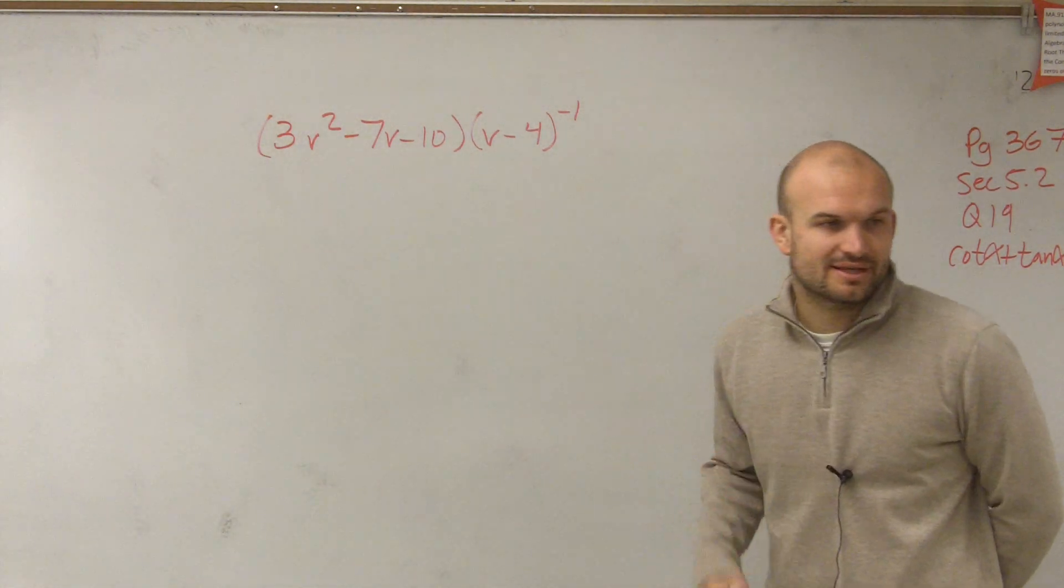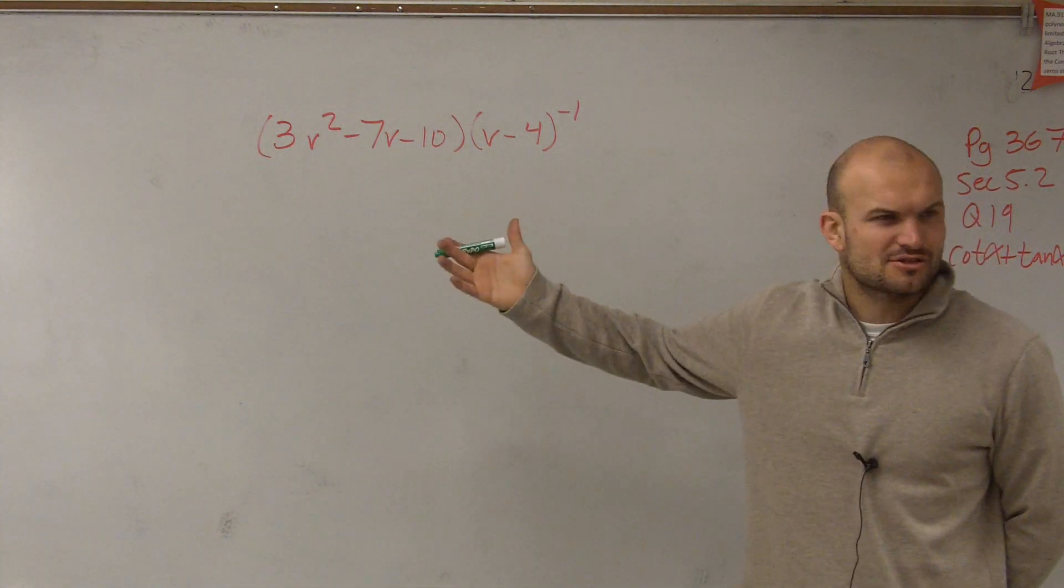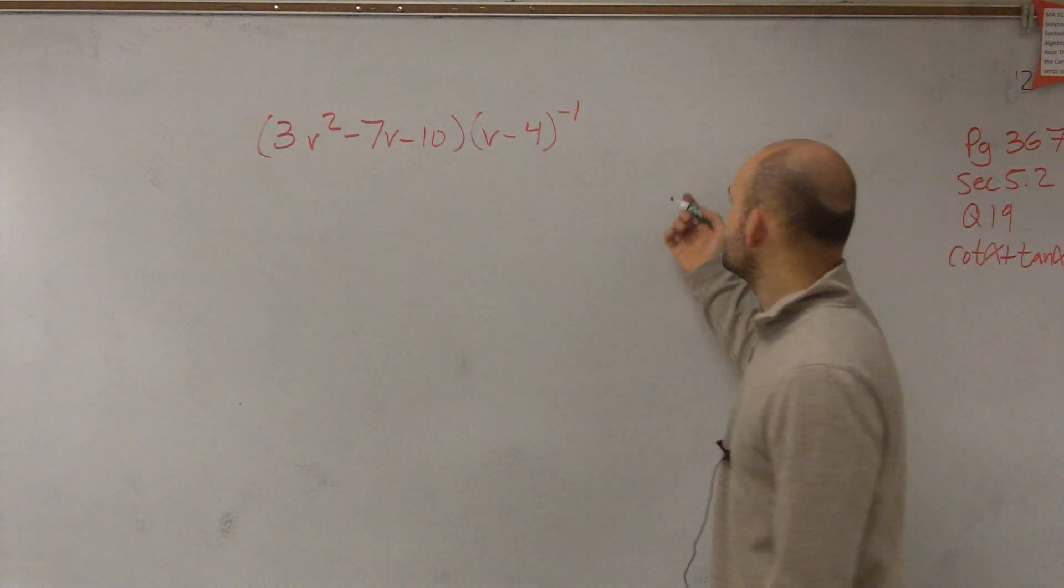I have 3v squared minus 7v minus 10 times v minus 4 raised to the negative first power. Now, obviously, ladies and gentlemen, we've been working with using long division. So you look at this problem and say, all right, well, I kind of know how to use long division, but why is it getting written like this? Well, first of all,